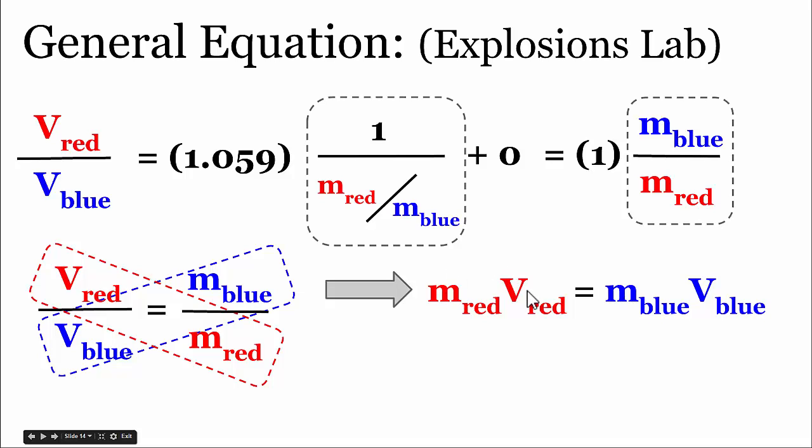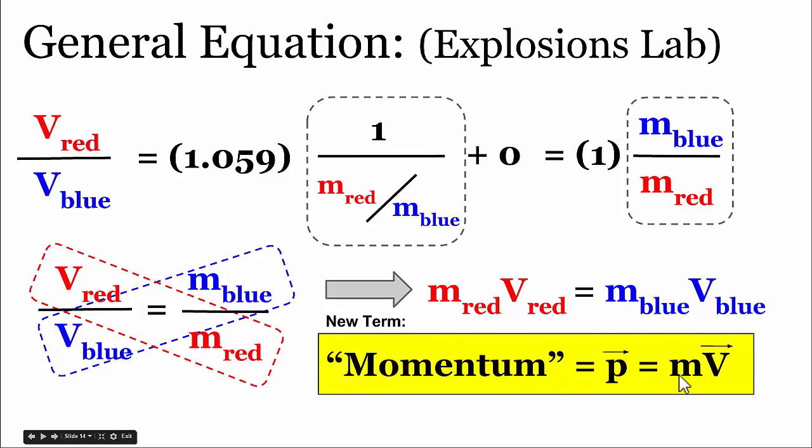Now, a mass times the velocity, the product of mass times velocity for an object, is actually pretty special in physics. We're going to investigate more about why and how that helps us solve these type of problems and collision problems. But the product of a mass times a velocity in physics is known as momentum. And this is going to be a new term, which you guys will need to define in your formal lab report.